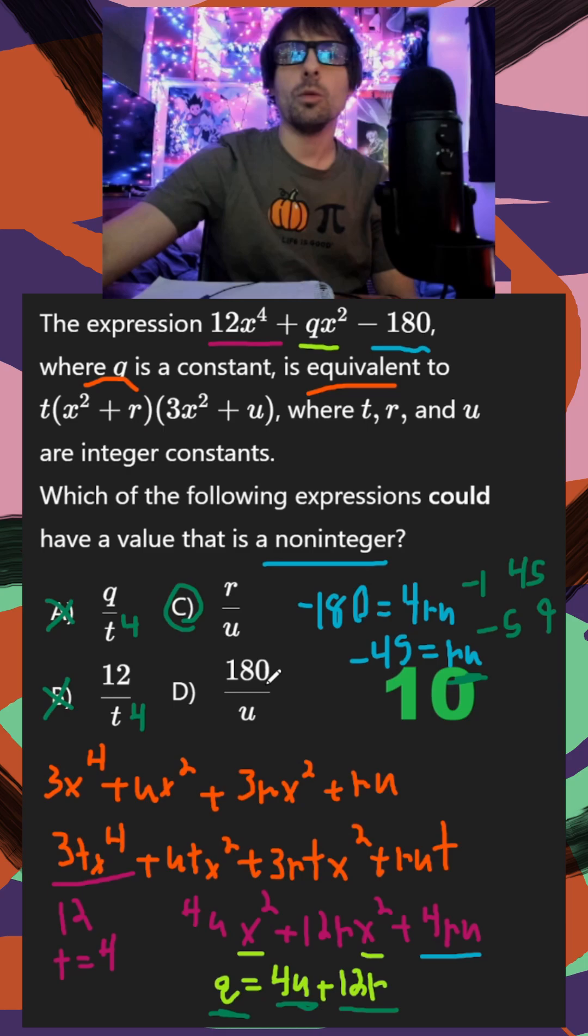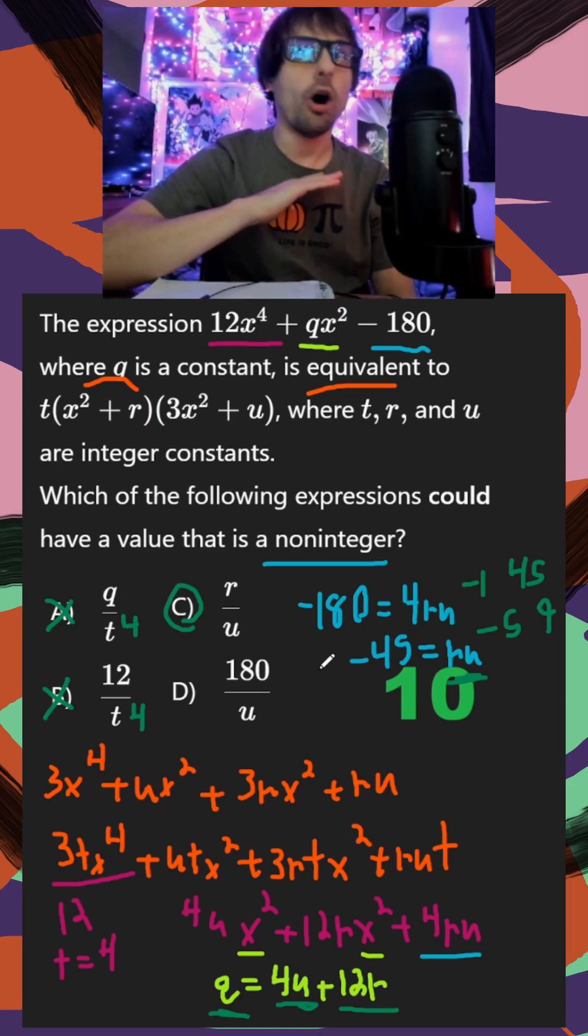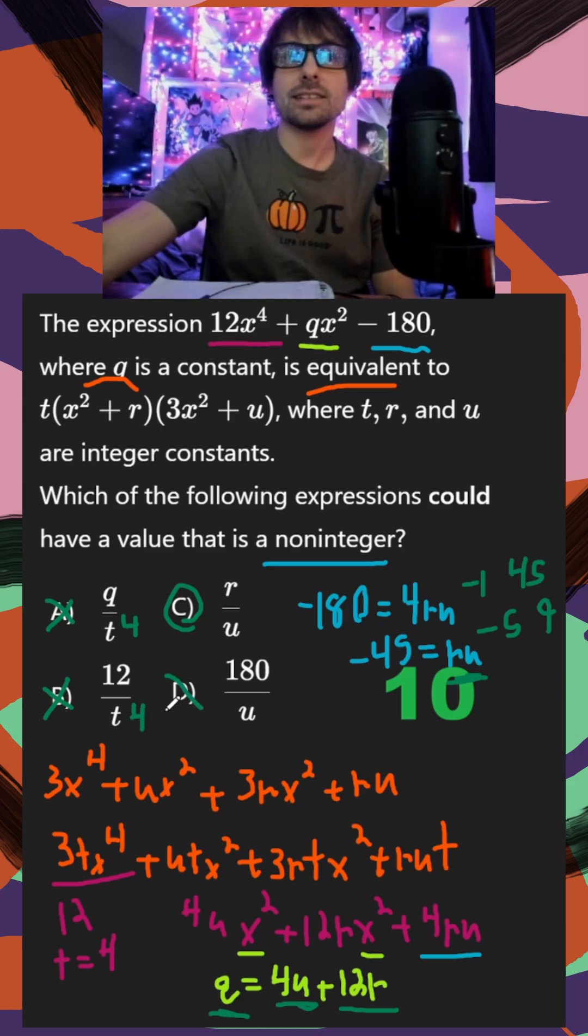But just to rule out d, 180 over u. Remember that u just has to be a factor of negative 45. 180 is going to be divisible by all factors of negative 45. So that's going to be an integer. Take care.